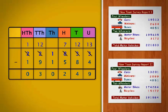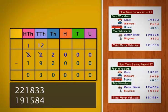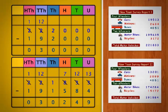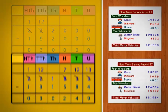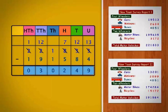Now, in order to check the answer, we compare this value with the estimated value. Rounding off 221,833 and 191,584 to the nearest numbers, we get 222,000 and 192,000. Subtracting the estimated values, we get 30,000. Since this value is close to the actual value, our answer is correct. The difference obtained by subtracting 191,584 from 221,833 motor vehicles is 30,249.